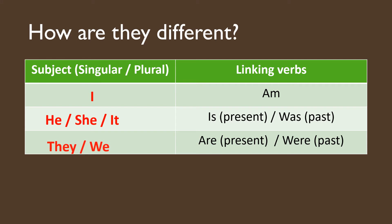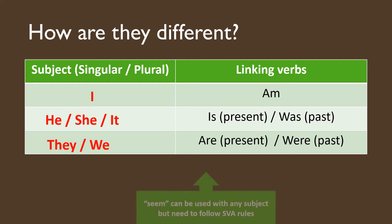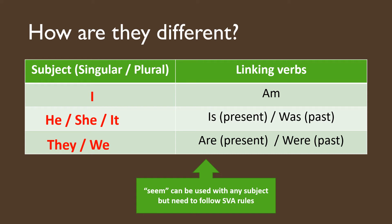And then we have 'are.' They are plural — 'they' is a plural subject, and 'we' is also a plural subject. 'Are' is used for present tense, happening now. And 'were' is the plural form for past tense. For example, 'They were...' or 'We were happy last night.' So you can use 'were.' What about 'seem'? 'Seem' can be used with any subject, but of course you need to follow the subject agreement rule. So 'seem' can be used with I, he, she, it, they, and we — but remember, you have to follow the subject agreement rule that we are going to learn after this.